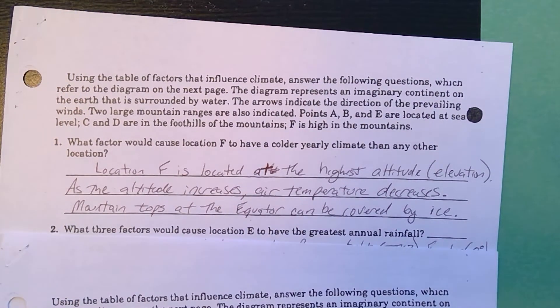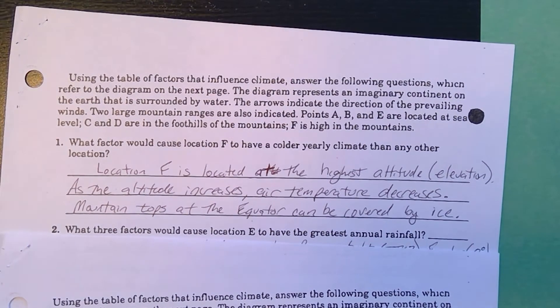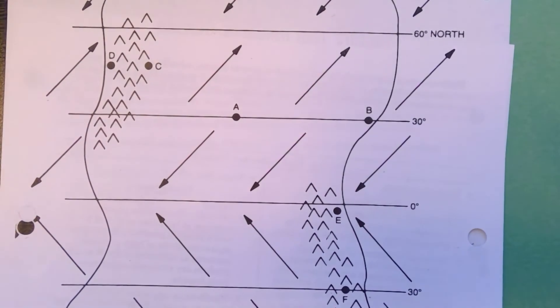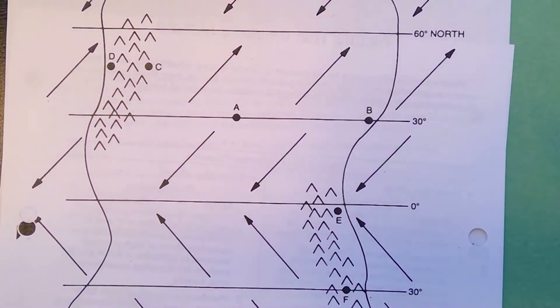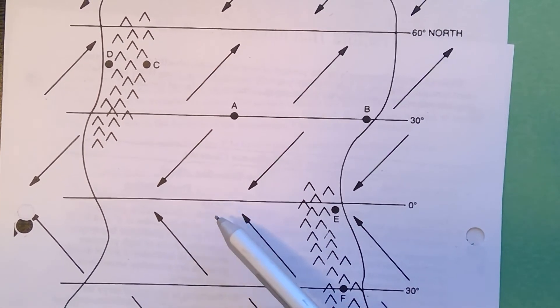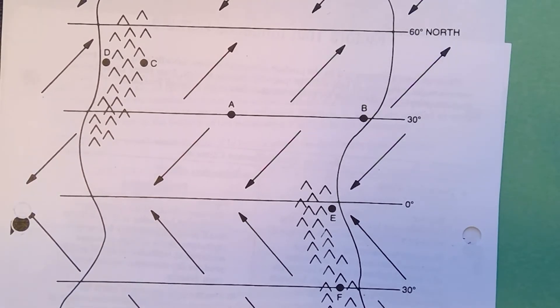The second question is asking you about location E. Location E has the highest yearly annual rainfall, and they're looking for three factors. Looking at E, one thing that you notice is it is at zero. This map, we didn't write it, but from the reference table you could put wet, low pressure belt brings lots of precipitation because the air rises.